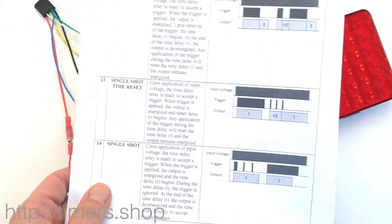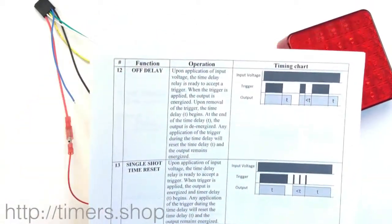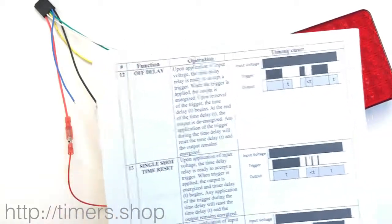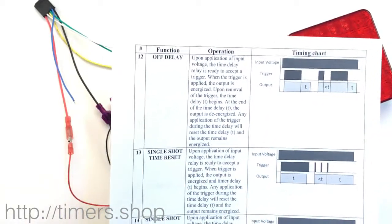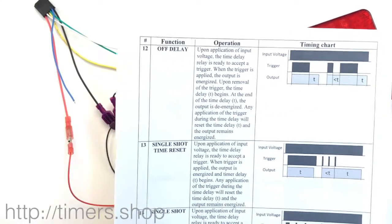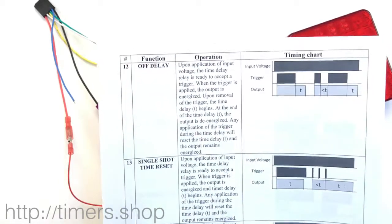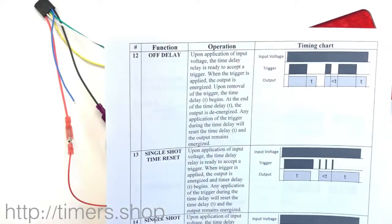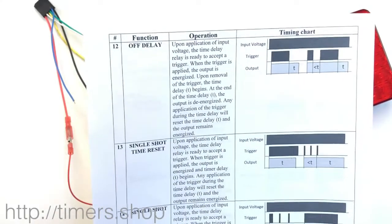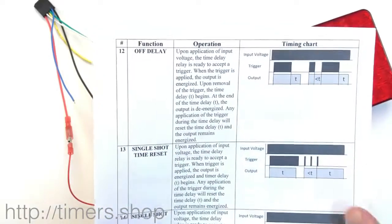Function number 12 is off delay — it delays the shutting off. As we had the example before, you can use it for automotive purposes. When you want to power something when ignition comes on, you want to power your device, let's say a GPS unit. But when you shut the ignition off, you want that unit to stay on for, for example, an hour.